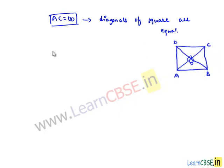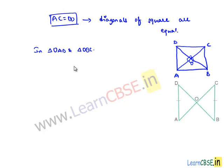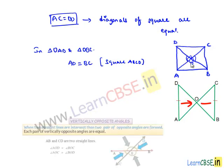Now let us consider two triangles — triangle OAD and triangle OBC. In this, AD is equal to BC as the sides of a square are equal. Secondly, we can say that angle AOD and angle BOC are equal, since they are vertically opposite angles about point O.